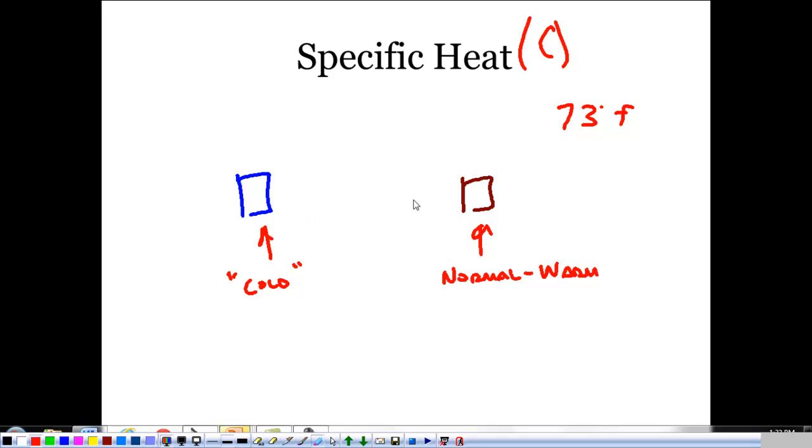Now, the reason for that is, looking at it, this has a lower specific heat, this has a higher specific heat. When you hold on to the metal, it's going to readily accept heat from you, and its temperature is actually going to change faster than the wood.